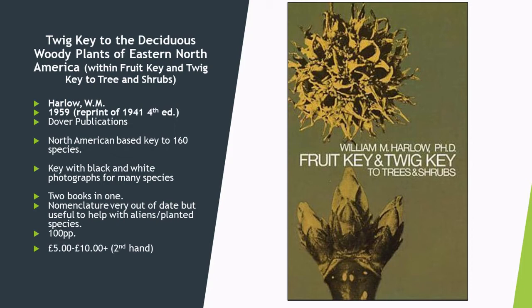With this next book we're really getting two books in one. Although titled A Fruit Key and a Twig Key to Trees and Shrubs, it's biased towards northeastern North America — a fruit key to northeastern trees and a twig key to deciduous woody plants of eastern North America. It was reprinted in the early 2010s but originally produced in 1941. The taxonomy is rather dated but the keys work remarkably well, and there are some very fine black and white photos showing close-ups of buds, thorns and other armour. It's still useful for alien and planted species that may crop up in your surveys.